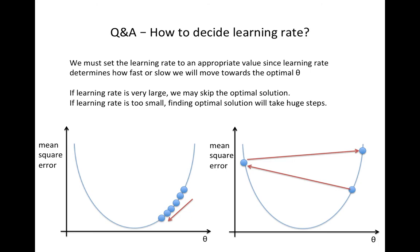Here is a second bonus: how do we choose the learning rate? The rule of thumb is not to use a very large or very small number. If the learning rate is too small, gradient descent will take a very long time. If the learning rate is too large, the theta values will jump around and may not converge. Thank you for watching, and I will see you in the next video.